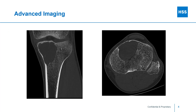Advanced imaging is then obtained in the form of CT or an MRI to better delineate the mass. Here you can see that the mass extends just up to the surface of the knee joint and the tibia along the medial cortex as well as along the anterior cortex, which has a small fracture in it, likely from lack of stability since the tumor has replaced the underlying bone structure.